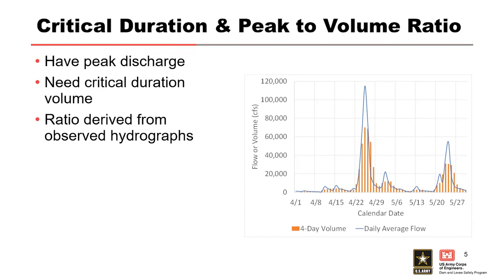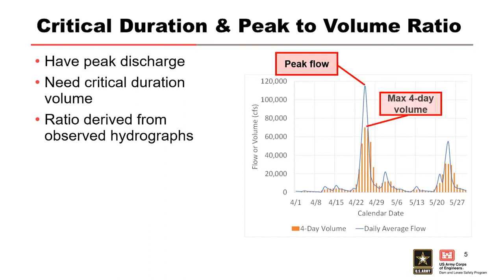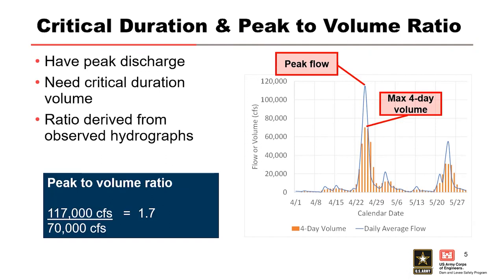This example shows hourly inflow data for a dam where the peak flow for the observed event is about 117,000 CFS. We computed a moving average of the four-day volume, shown as orange bars representing a running four-day average. The highest one, about 70,000 CFS, is chosen as our four-day average volume. To get our peak to volume ratio, we divide 117,000 by 70,000 and get 1.7. Put another way, the four-day average flow is 60% of the peak flow value. Typically, you'll want to estimate this ratio based on several observed flood events and then select a representative or average ratio to use in flood hazard analysis.